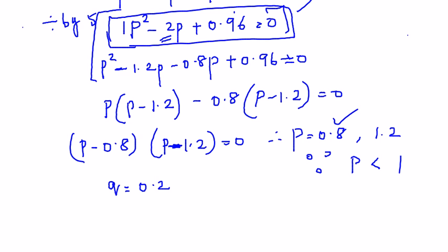Therefore substitute it in your formula: P(X) = nCx, n is 5, so 5Cx.